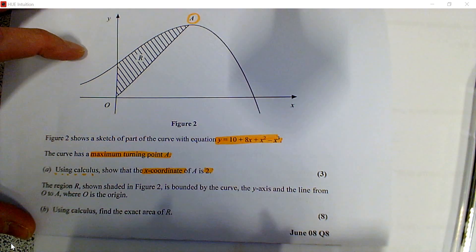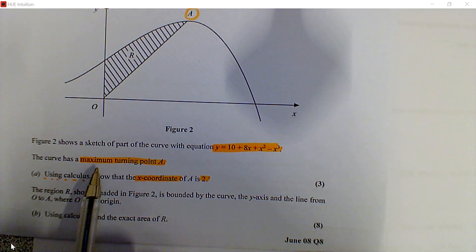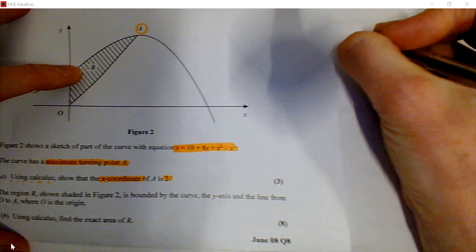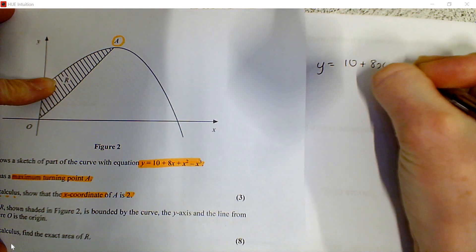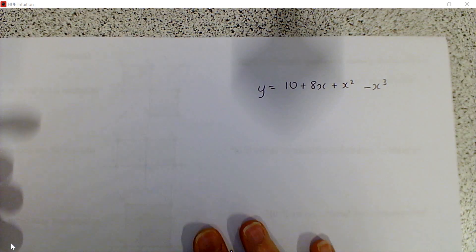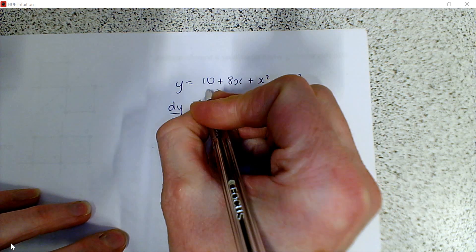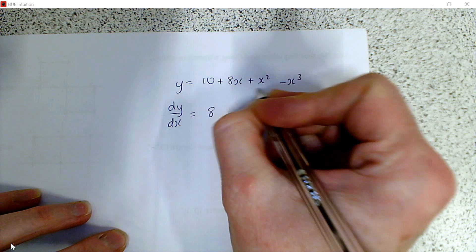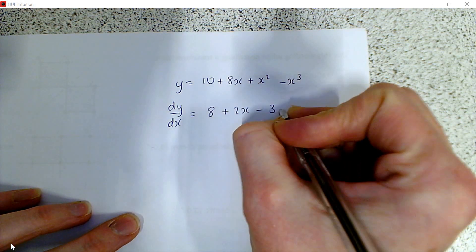It tells us to use calculus, so we either differentiate or integrate. We're finding a maximum, so we differentiate. I've got y equals 10 plus 8x plus x squared minus x cubed. Differentiating: 10 gives 0, 8x gives 8, x squared gives 2x, and x cubed gives 3x squared.